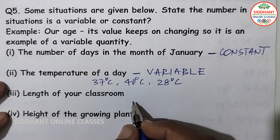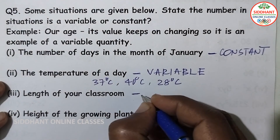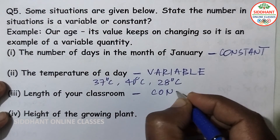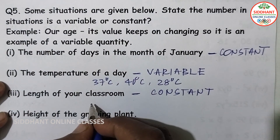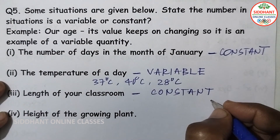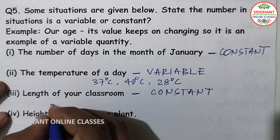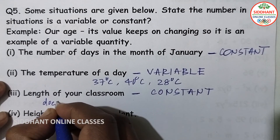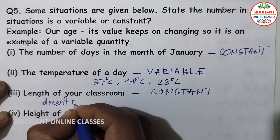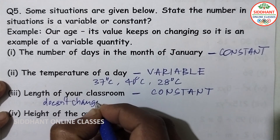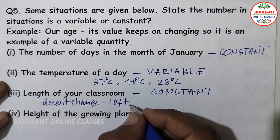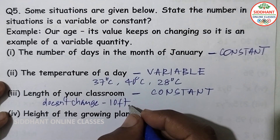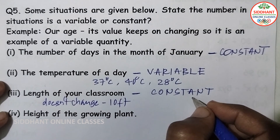Third, the length of your classroom — it is an example of a constant. The length of a classroom doesn't change. If the length is 10 feet today, it will still be 10 feet tomorrow or after one month. So it is an example of a constant.